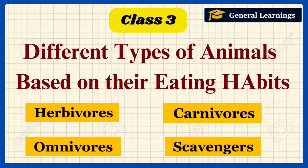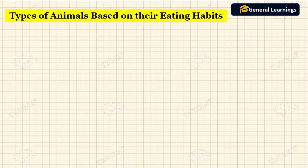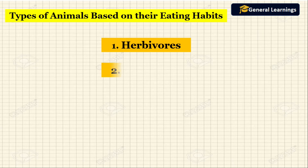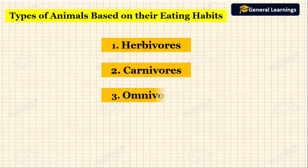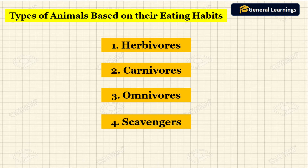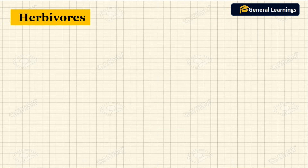Hello students, welcome back to our channel Gentle Learnings. In this video you are going to learn about different types of animals based on their eating habits. The types of animals based on their eating habits are: herbivores, carnivores, omnivores, and scavengers. Now we will see each of these types in detail.